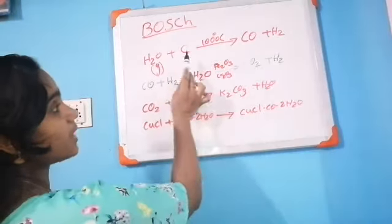This mixture of carbon monoxide and hydrogen is called water gas — please mark that in your textbook. Water gas is then passed over an excess amount of steam. Here the catalyst is ferric oxide and the promoter is chromium trioxide. Then we get carbon dioxide and hydrogen.